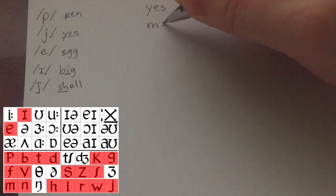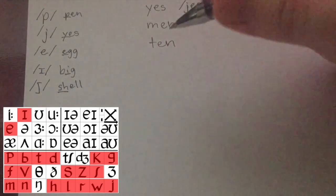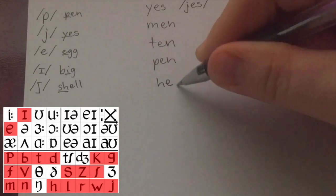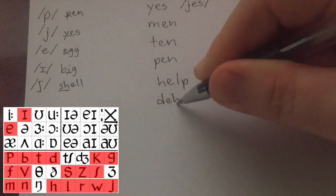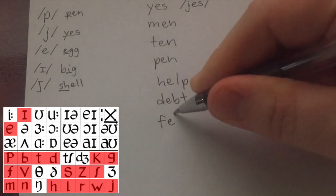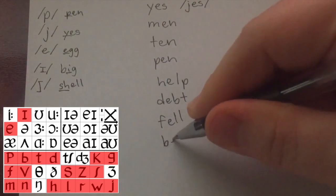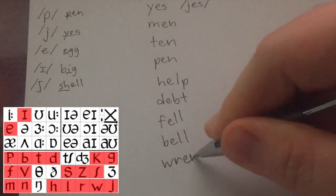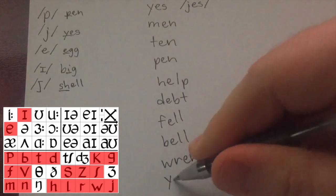Now, I'll write the English here, and then you pause it to catch up and try to write the next part. So we've got yes, men, ten, pen, help, debt, fell, bell, wren.